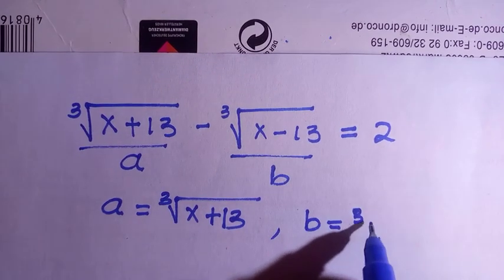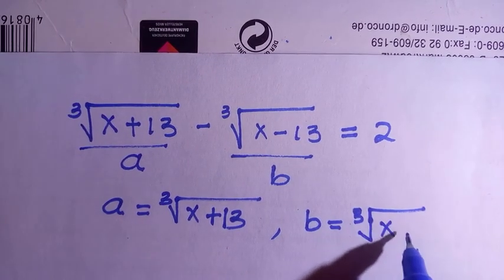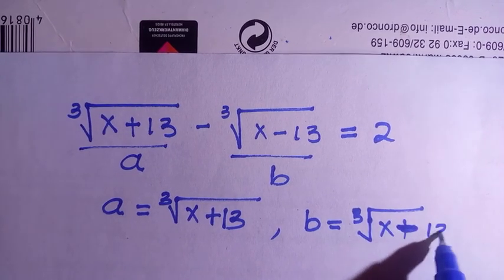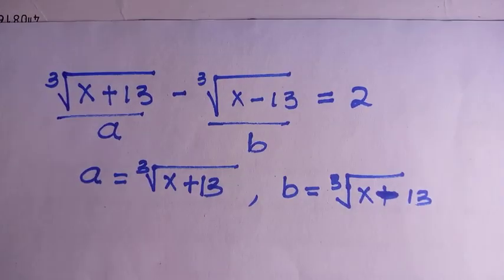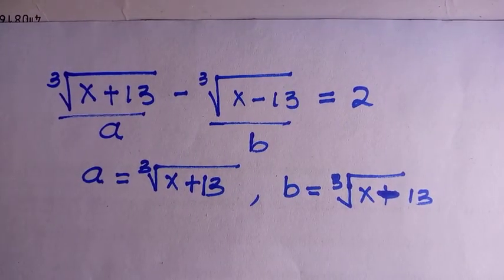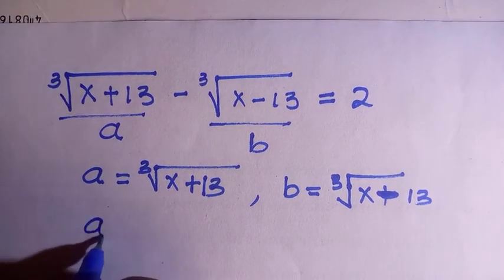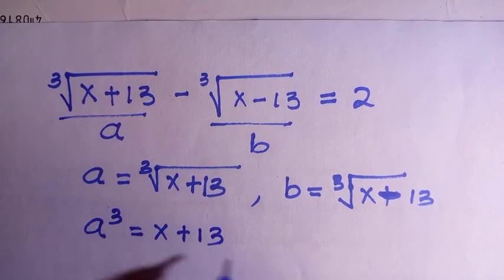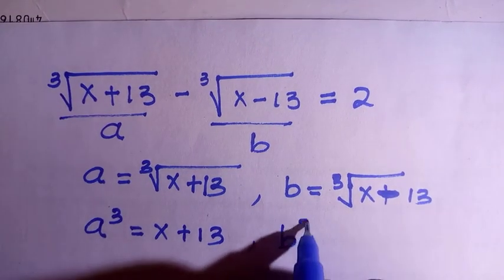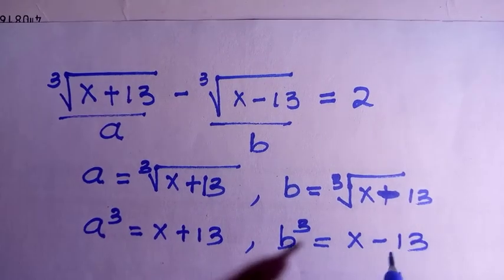For the second one, b equals to the cube root of x minus 13. Now if I take the cube of both sides, we get a raised to the power 3 equals to x plus 13, and for the second one, b raised to the power 3 equals to x minus 13.